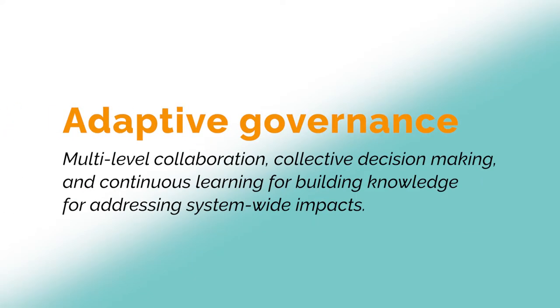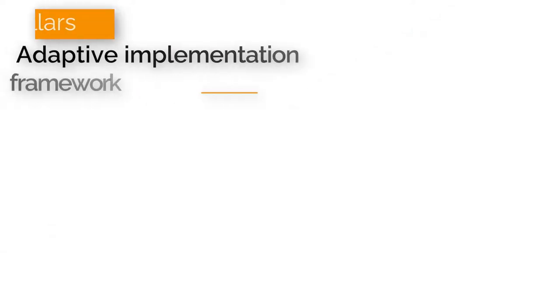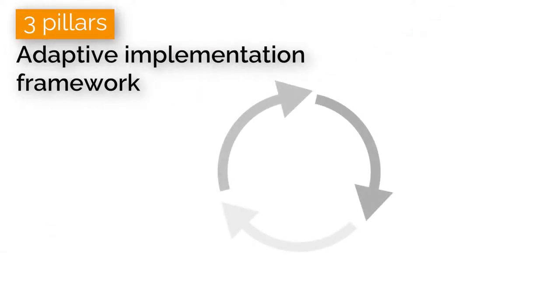It requires systemic and transformative thinking based on the concept of adaptive governance, which is more about multi-level collaboration, collective decision-making, and continuous learning for building knowledge for addressing system-wide impacts. We suggest three mutually reinforcing pillars for designing an adaptive implementation framework.